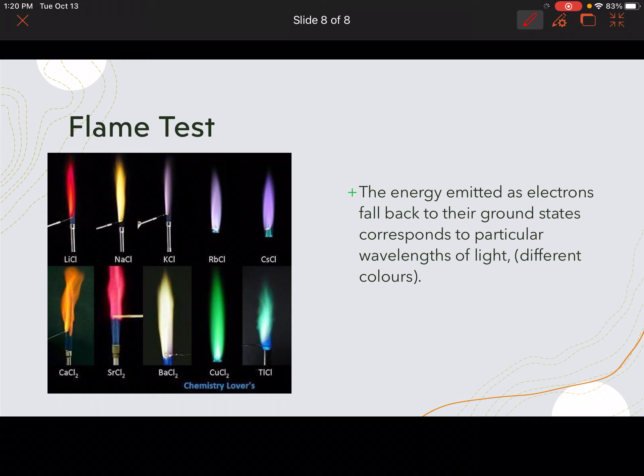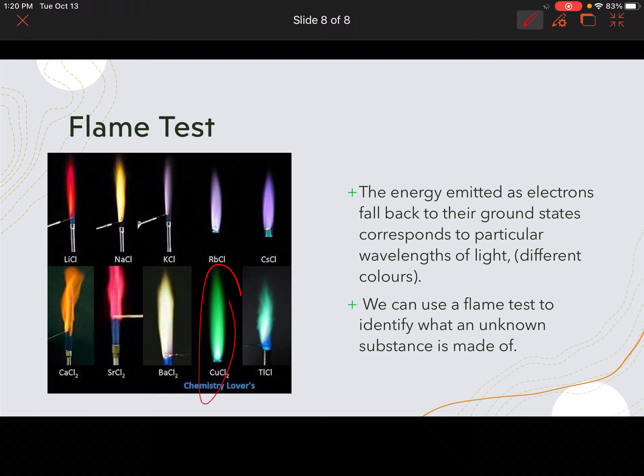And we can use this in terms of identification of things. So as you can see here, we've got our copper chloride. Copper always gives you a really strong greeny blue color there. So we can use a flame test to identify what an unknown substance is made of.